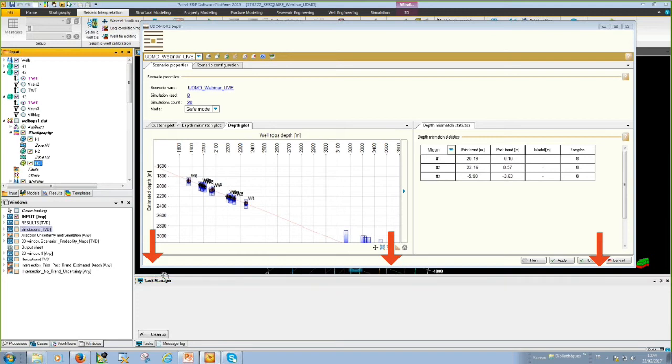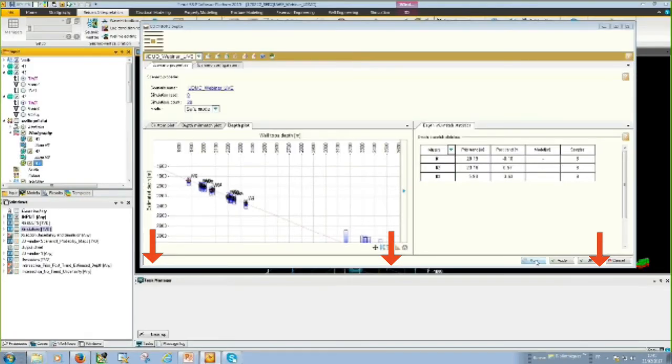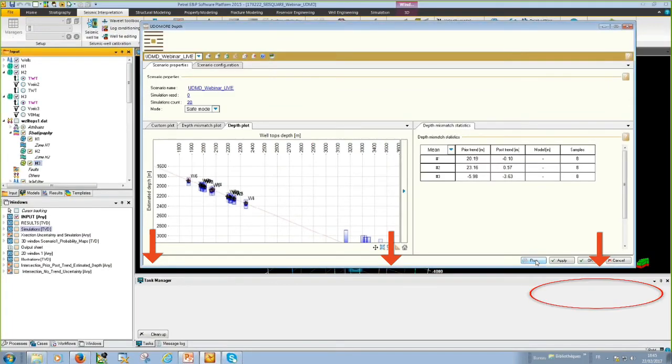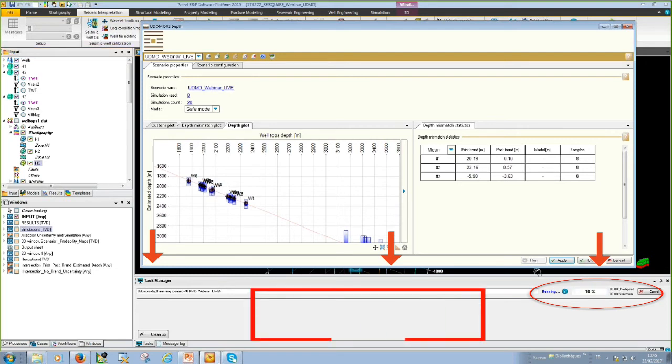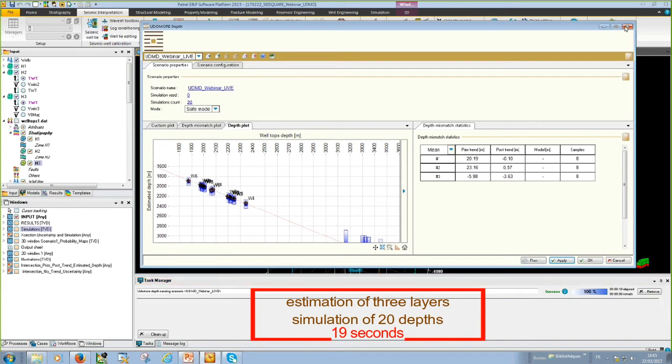I would like you to pay attention on what is going on now. Because this operation, which integrates all sources of uncertainty on seismic time, well depth markers, interval velocity, will be computed just in some seconds. So, let's run. In the task manager, you will see the timing of the operation. We estimated three layers, and now there is the simulation of 20 depths. So, we are near to finish. 100% is finished, and we finished our computation in 19 seconds. So, let's go and see our results.